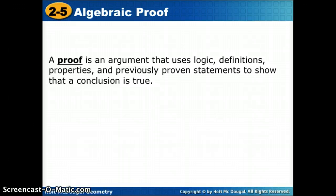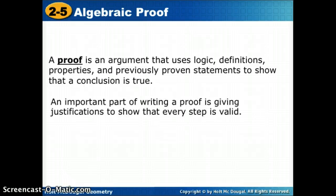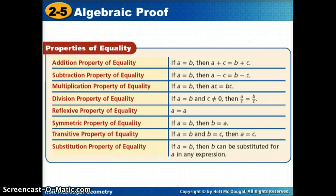If you notice what kind of reasoning we're using, if we're using definitions and properties, we are using deductive reasoning. An important part of writing a proof is giving justifications to show that every step is valid. So we'll go through some examples of this but really we're just saying how did you know to do that step in the problem. So to do that we need to come up with some properties or definitions that we can use. We've learned some along the way but we're going to remind ourselves of some of the ones we've learned throughout our math careers.